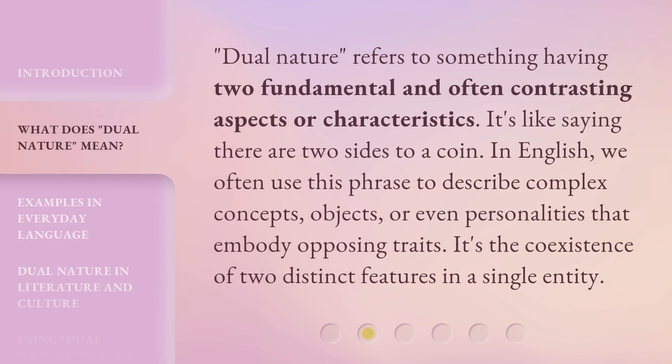Dual nature refers to something having two fundamental and often contrasting aspects or characteristics. It's like saying there are two sides to a coin. In English, we often use this phrase to describe complex concepts, objects, or even personalities that embody opposing traits. It's the coexistence of two distinct features in a single entity.